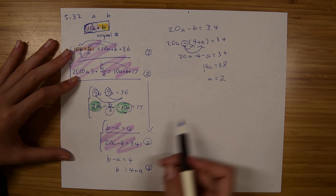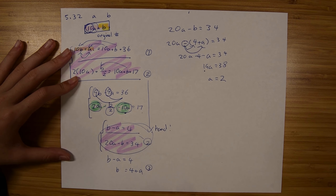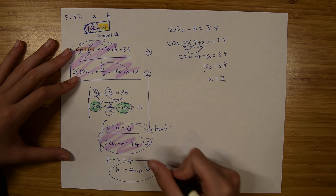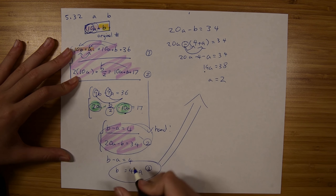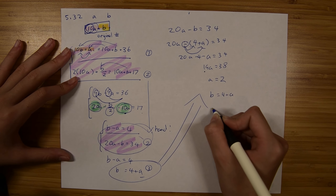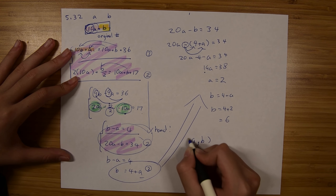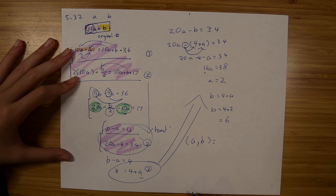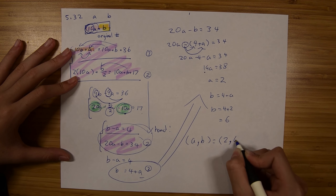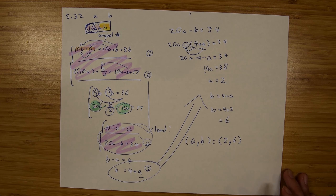With A equals 2, plug back into B equals 4 plus A to get B equals 6. The ordered pair is (A, B) equals (2, 6). That is how you solve problem 5.32. And that summarizes chapter 5, multivariable linear equations.